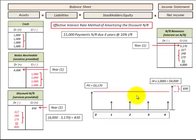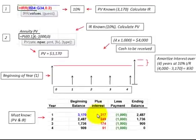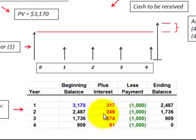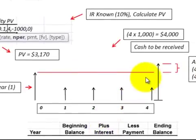Next, let's go back and go through the mechanics of determining what our interest revenue is in each of those years, so we can allocate that to our revenue account. Here we'll determine what our interest revenue is for each of the next four years. In this case we need to know what our beginning balance is, or what our present value of that notes receivable is, and we need to know the interest rate. Let's look at our diagram.